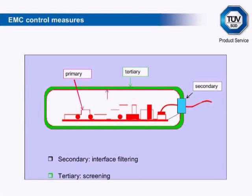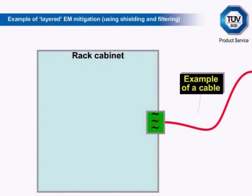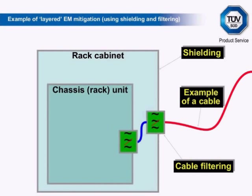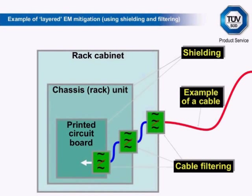Choice and mounting of connectors forms an important part of secondary-level EMC control. Full shielding at the tertiary level is an expensive choice and should only be chosen when all other measures have been applied. But since it is difficult to predict the effectiveness of primary measures in advance, it is wise to allow for the possibility of being forced to shield the enclosure. At the system or installation level, further measures include cable routing and segregation, as well as system-wide grounding and bonding. In a layered EMC mitigation example using shielding and filtering: a cable enters an equipment rack enclosure with filtering on the cable and shielding provided by the rack cabinet. It then passes into the chassis through a second filter, with the chassis itself providing additional shielding. Finally, the circuit has filtering on the cable again, plus a shielded enclosure around it.